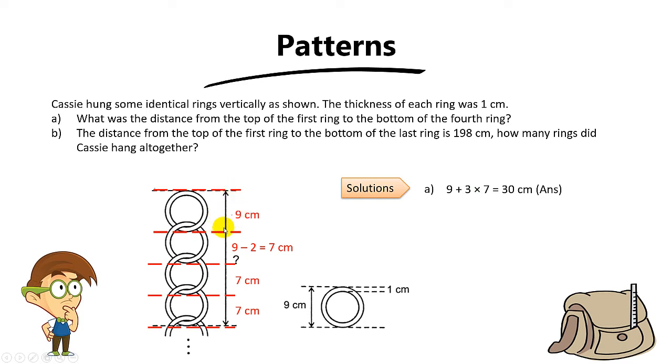Okay, so 9 is referring to the first length. Then plus 3, 3 is basically the number of the intervals. Right, in this case there are 3 sevens over here. Right, 1, 2 and 3. So you take 9 plus 3 times 7. The answer is 30cm.